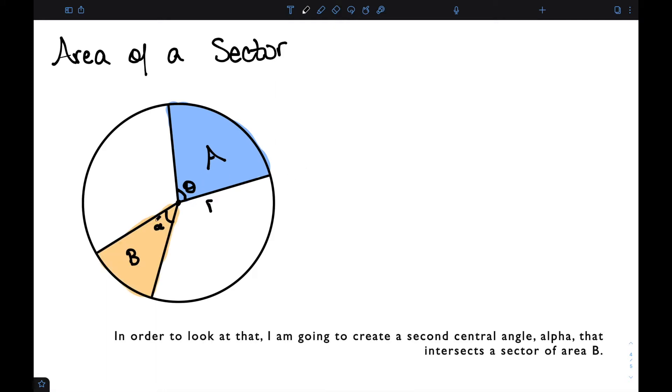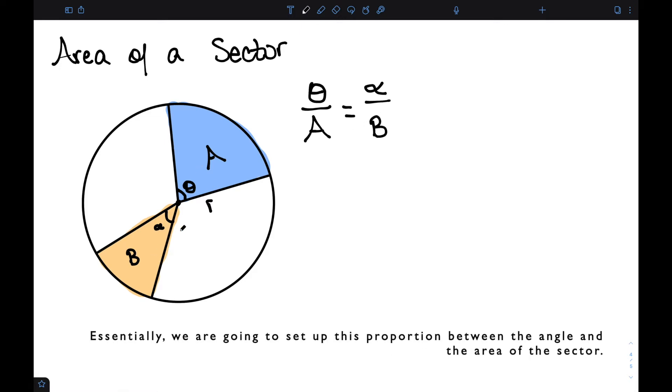In order to look at that, I'm going to create a second central angle alpha that intersects a sector of area B. Then geometry tells me that angle theta divided by the area is going to be equal to the angle alpha divided by its area. Essentially, we're going to set up this proportion between the angle and the area of the sector.